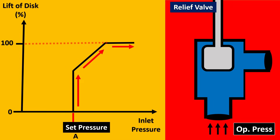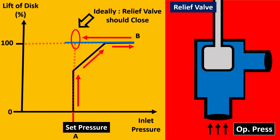Now let us trace back: when the fluid is going outside from the relief valve, the pressure is going to reduce. So your pressure at point B is now reducing slowly. Let us track this with the color blue. As it is reducing, you would notice one very interesting thing — at this point, ideally the set pressure is reached and the relief valve should close, but it will not close no matter what you do.